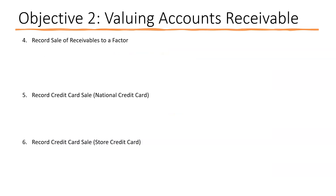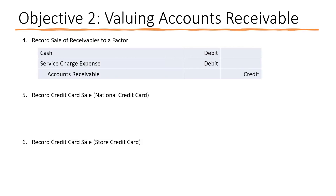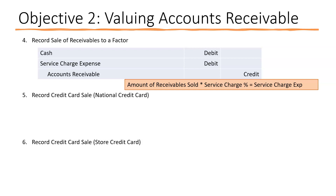To record the sale of receivables to a factor, the bank or finance company buys your receivables, customers pay them, and you get cash earlier while paying a service charge. The journal entry debits cash and service charge expense, and credits accounts receivable for the full amount sold. The service charge is the amount of receivables sold times the service charge percentage, and cash received is the difference.